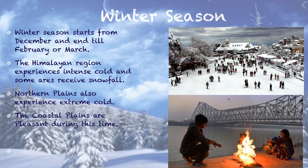From October onwards it starts becoming pleasant. The sun is not so hot, the days start becoming shorter and nights longer — this marks the beginning of winter. It continues till February or March. January is the coldest month. Winters are very cold in the Himalayas with snowfall in many places. The northern plains are cold, the cold decreases as we go south, and the coastal plains are pleasant during winter.